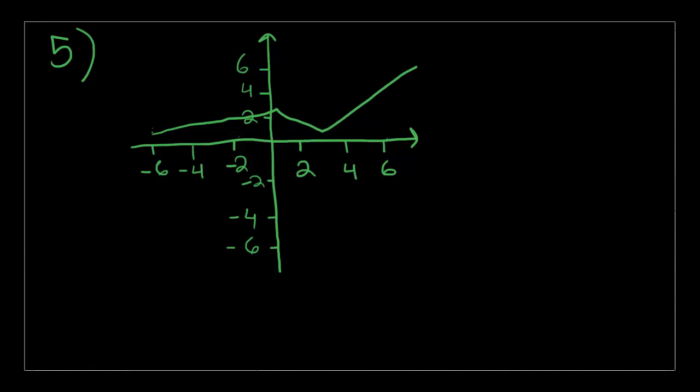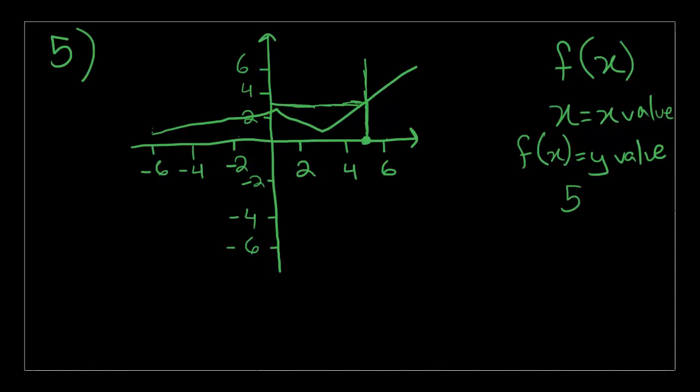The figure above shows the graph of the function h. Which of the following is closest to h of 5. Another function review. This is how function works. f of x. The x is equal to the x value. And f of x is equal to the y value. So they gave us an x value of 5. 5 is somewhere around here. So now we need to find the corresponding y value. So let's just go up like this. So it's somewhere over here, which is approximately between 2 and 4. So that's equal to 3. And h of 5 is closest to 3. Which is choice C. I think I'll do another problem. Last problem for the day.